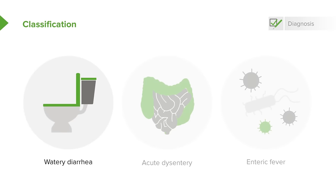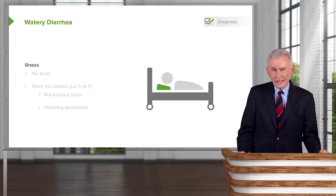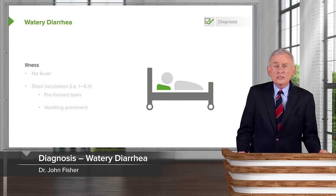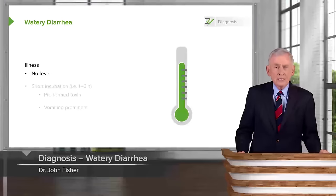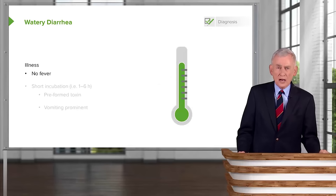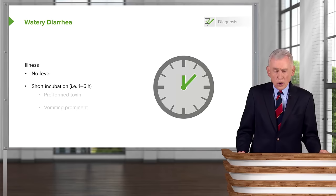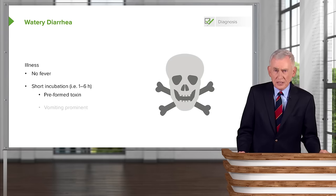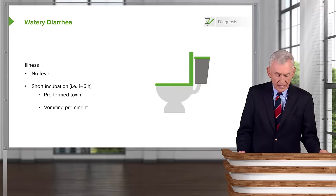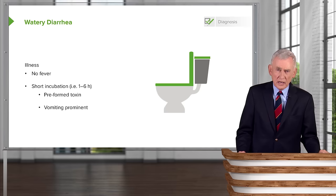How do we classify diarrhea? We need to decide whether it's watery diarrhea, acute dysentery, or something like typhoid fever — enteric fever. Patients who have most forms of watery diarrhea do not have fever. Ordinarily this is a disorder with a short incubation of one to six hours, especially if there's preformed toxin present in the food. Vomiting is more prominent in that type of food poisoning.